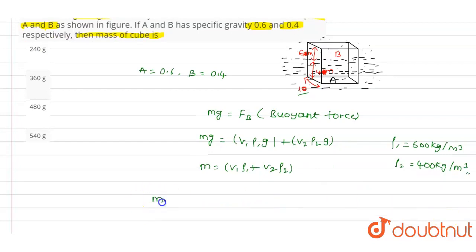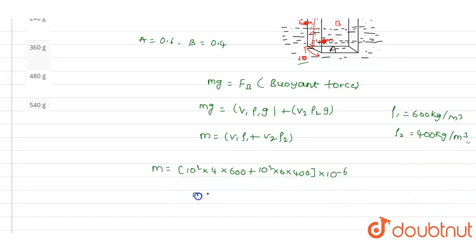The value of m will be equals to 10²×4×600 plus 10²×6×400. This will be multiplied with 10^-6. So the mass of the cube will be equals to 480.